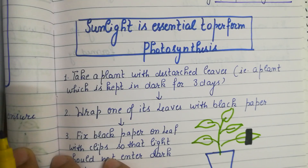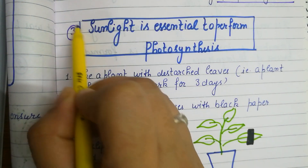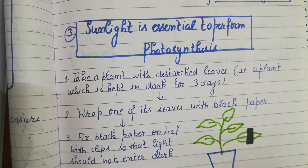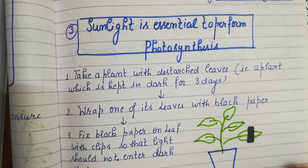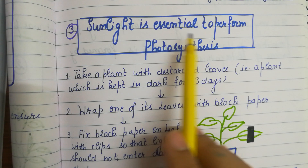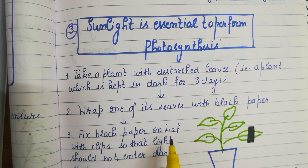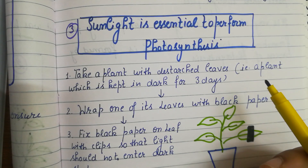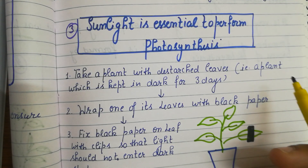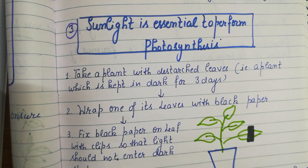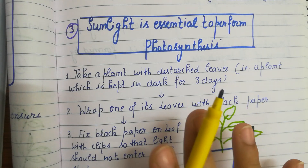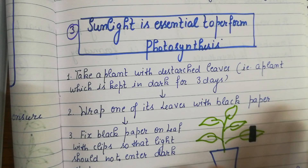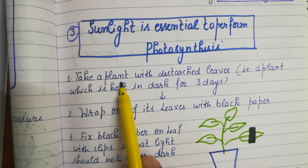That was our second activity. Now the third and last activity after autotrophic nutrition — after this we will finish our first topic. Sunlight is essential to perform photosynthesis. Carbon dioxide, water, and sunlight are the essential elements for the process of photosynthesis. From the previous two activities, you have got the idea of the purpose of all these activities.